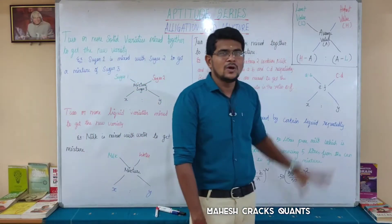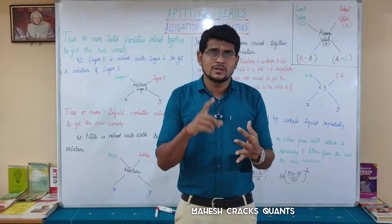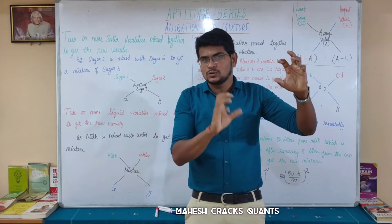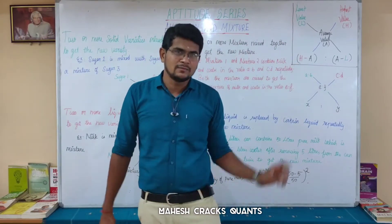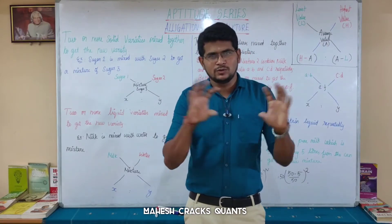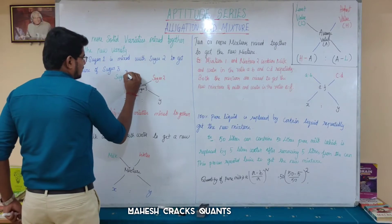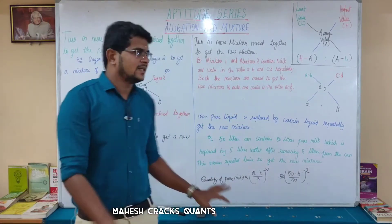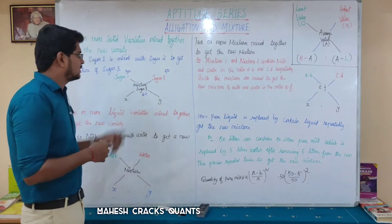What we use is the alligation formula: Least value, Mean (average) value, Highest value. We use this across various topics — percentage, profit and loss, simple interest, and other areas. The least value goes on the left side, the highest value on the right side, and the average value is in the middle. When you cross-multiply, that gives you the ratio — the difference on each side.